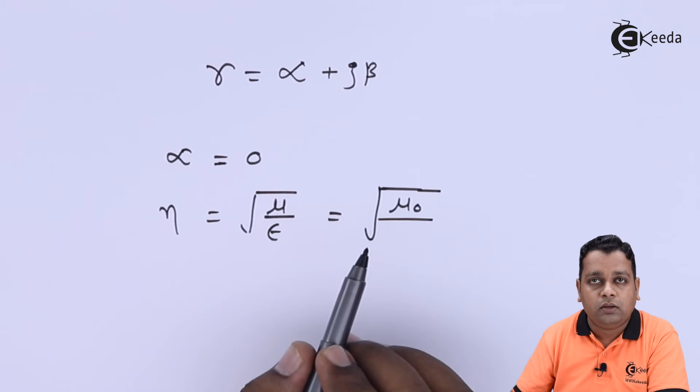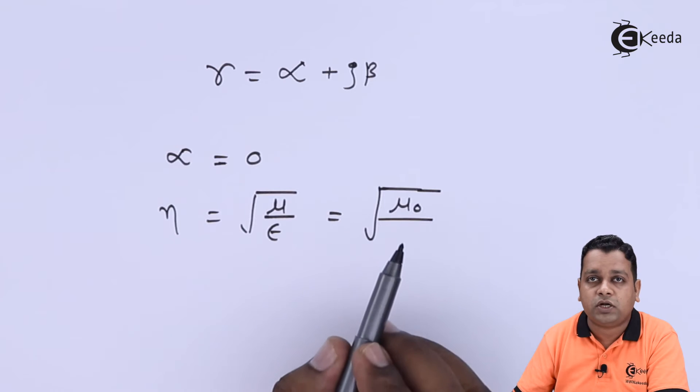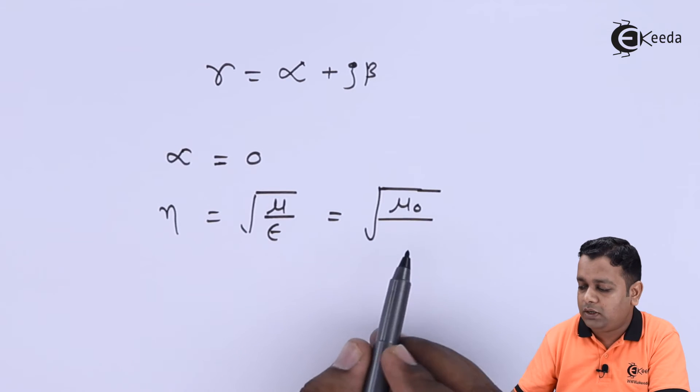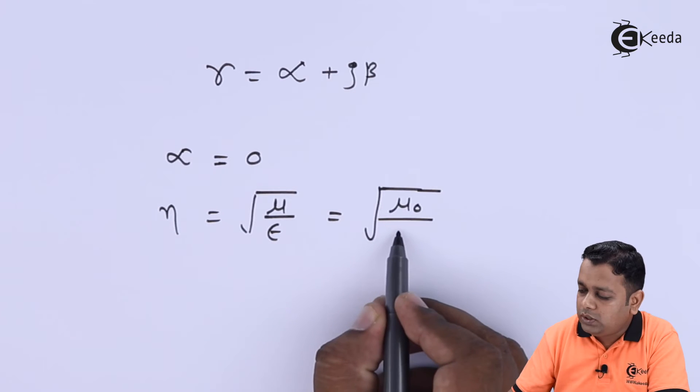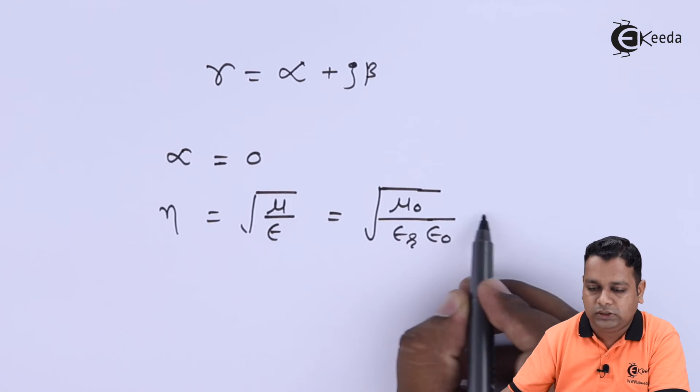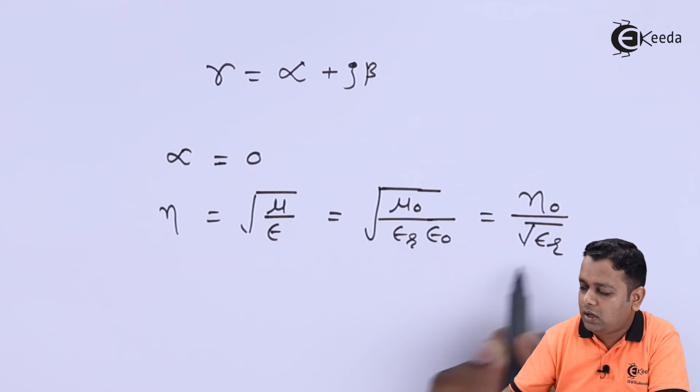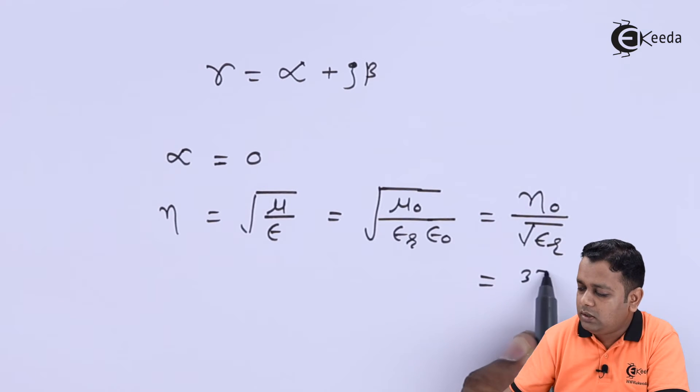It will be divided by εᵣ × ε₀. So here we can write η₀ divided by √εᵣ, or you can simply write 377 divided by √εᵣ. The unit of measurement is ohms.